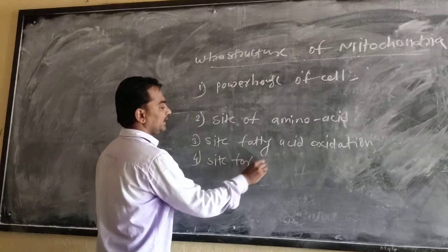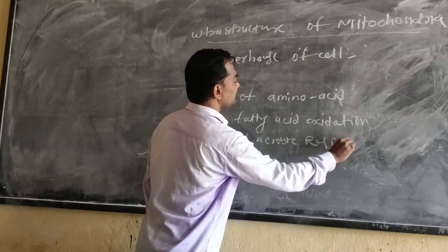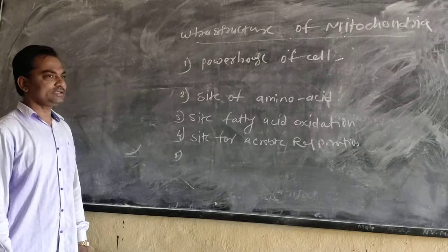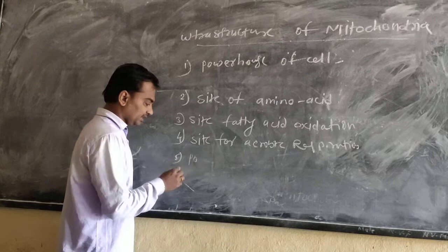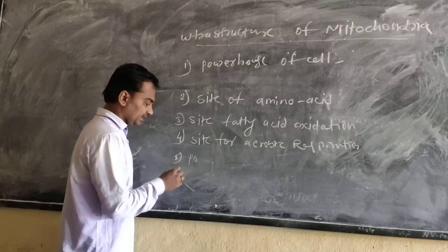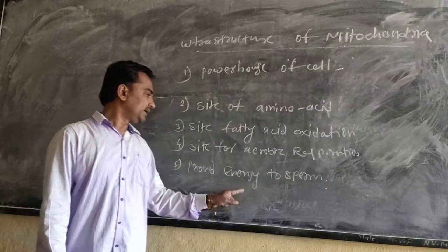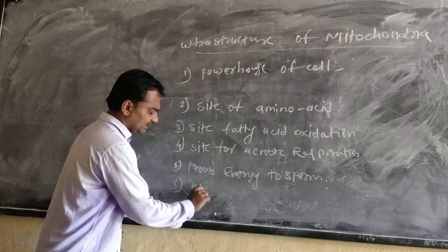The next function: mitochondria is a site for aerobic respiration. Certain steps of aerobic respiration occur inside the mitochondria — specifically the TCA cycle and the electron transport system. The next function: mitochondria provide energy for the motility of sperm during fertilization, supplying energy to the sperm cell.